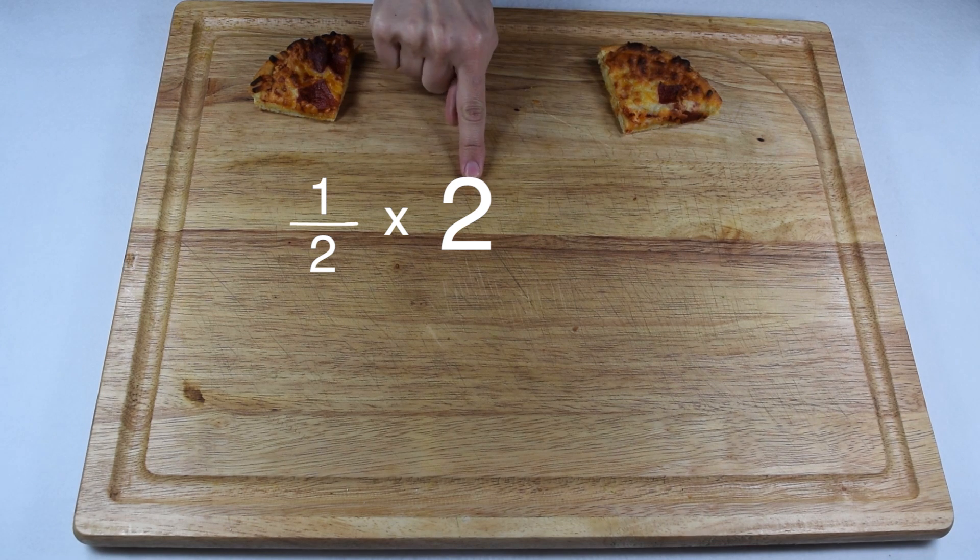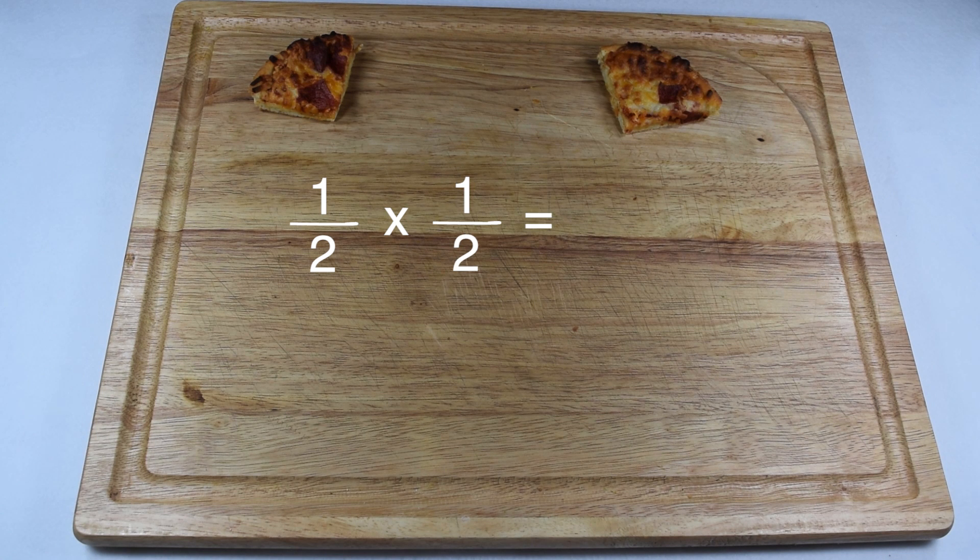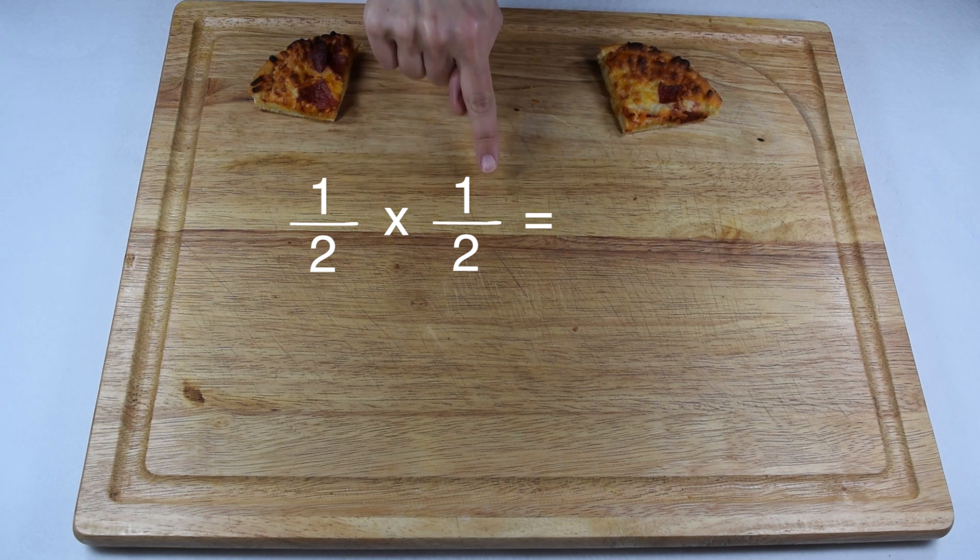In order to take the reciprocal of my divisor, I first need to make it into a fraction. Two becomes two over one, and then I can take the reciprocal of it, which is one half. This means we're solving one half times one half.